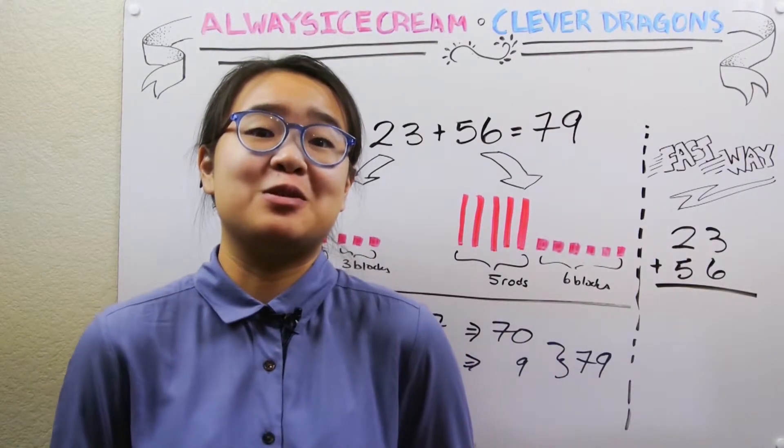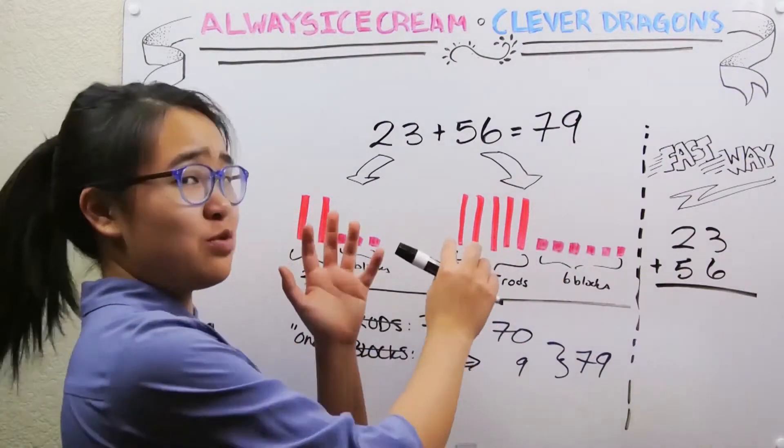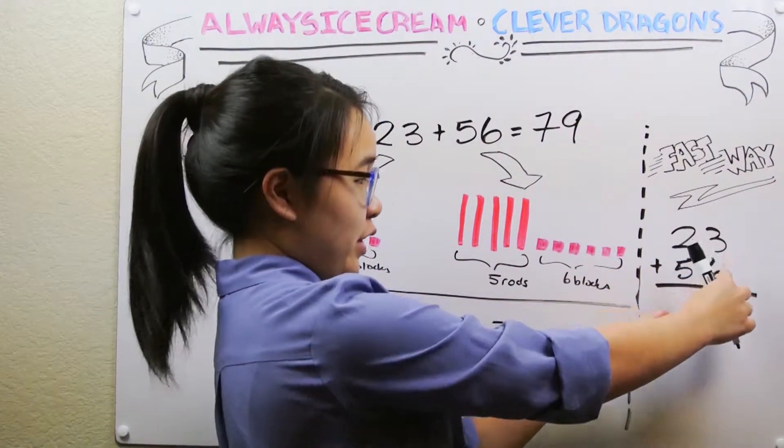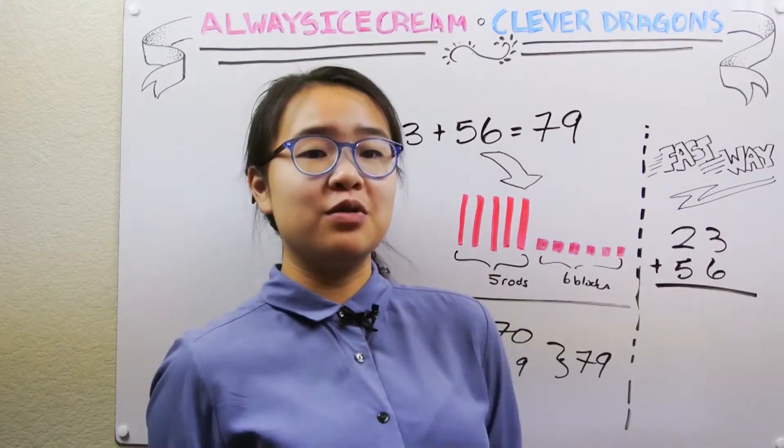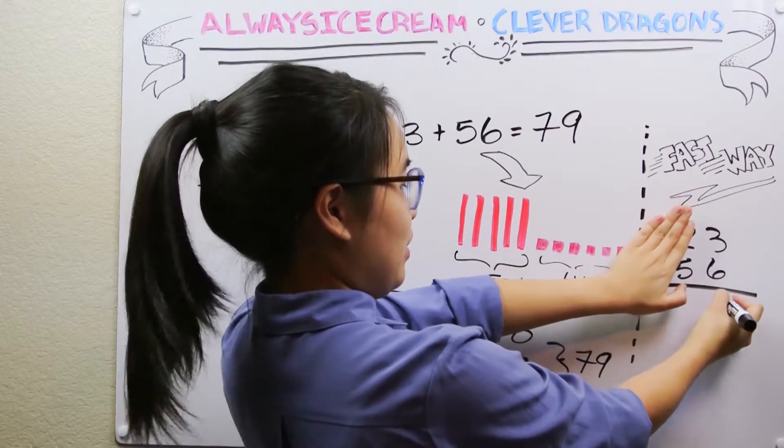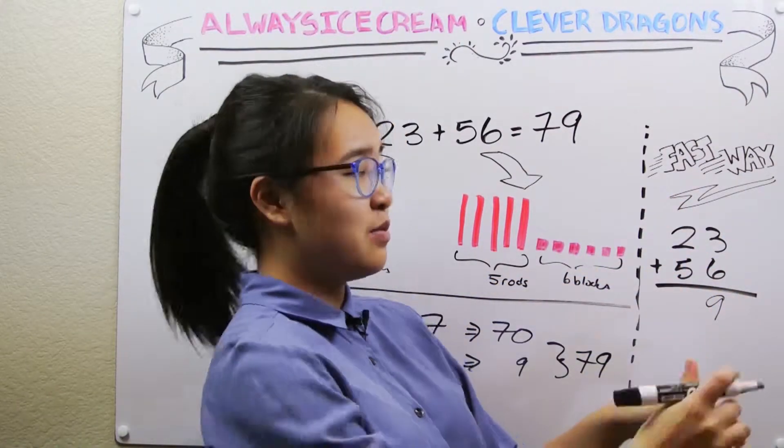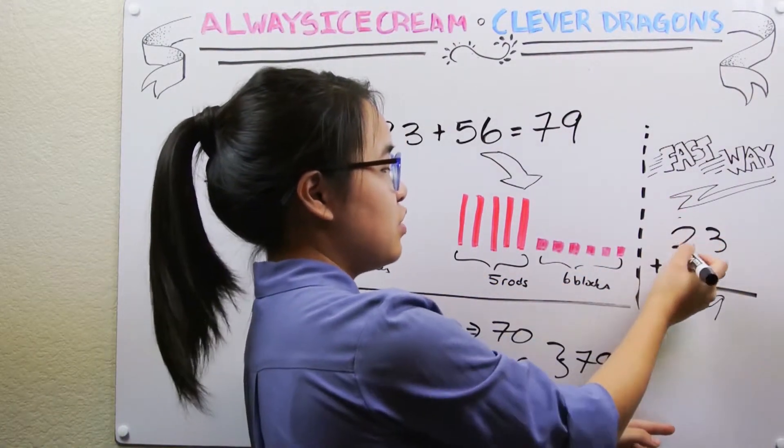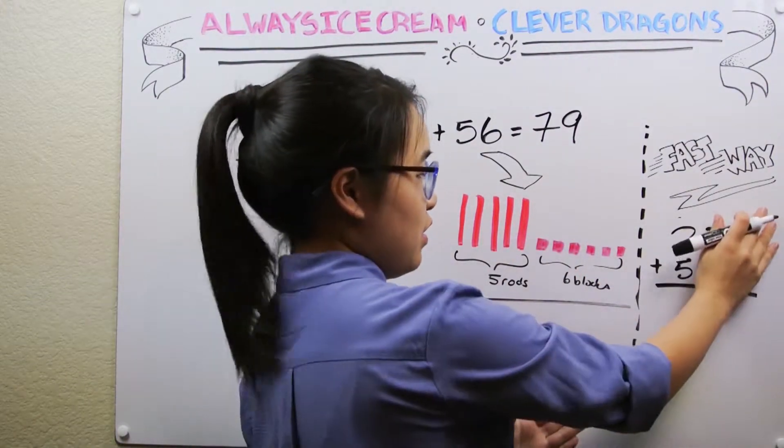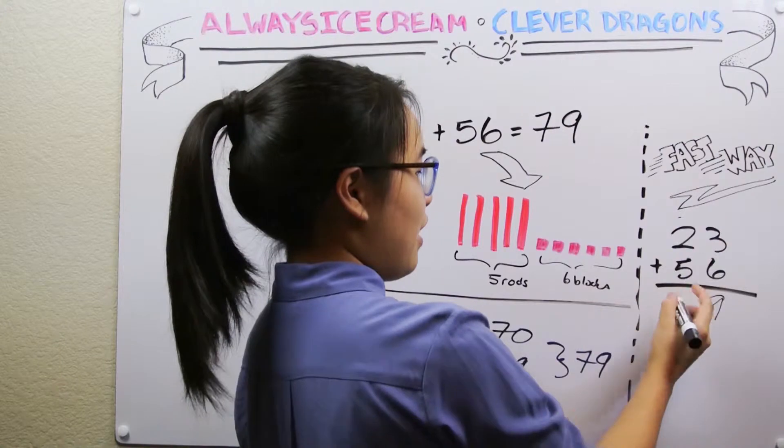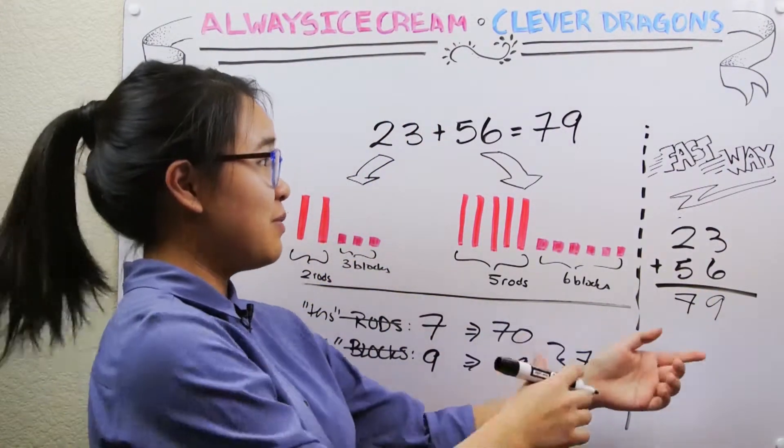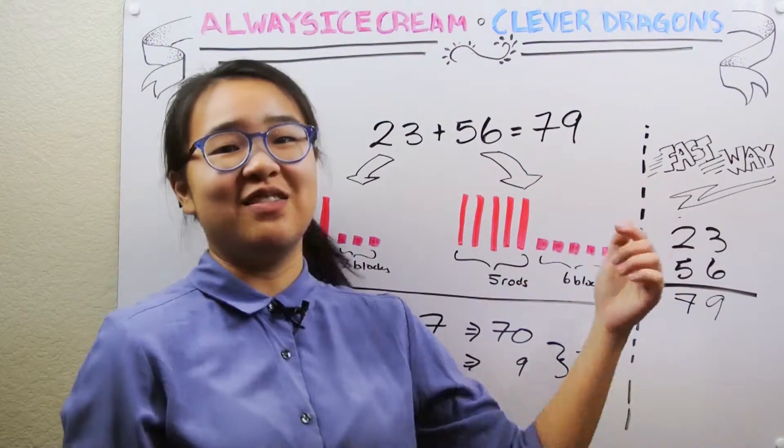But there's an even faster way to do this. Instead of just drawing out all these rods and units and counting them up, we can realize that these numbers over here, three and six, are both ones and add them separately. So three plus six is equal to nine. And that these numbers over here, two and five, are both tens and add them separately as well. So two plus five is equal to seven. And as you can clearly see, we end up with the same number as we did over here, 79.